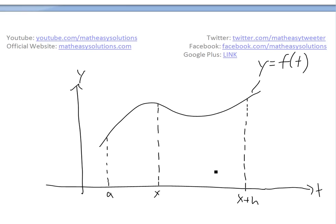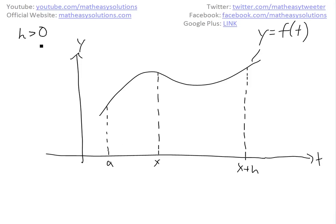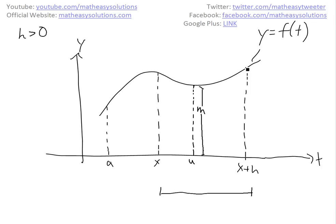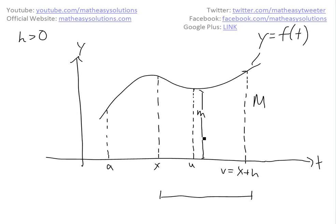Now the next part of the proof: we'll just assume h is greater than zero — the proof is very similar for h less than zero. If f is continuous between x and x plus h, then since it's a continuous function we're going to have a minimum value on this interval. We'll call the minimum value little m, occurring at point u. And we'll call the maximum value capital M, occurring at point v, where v equals x plus h in this case.